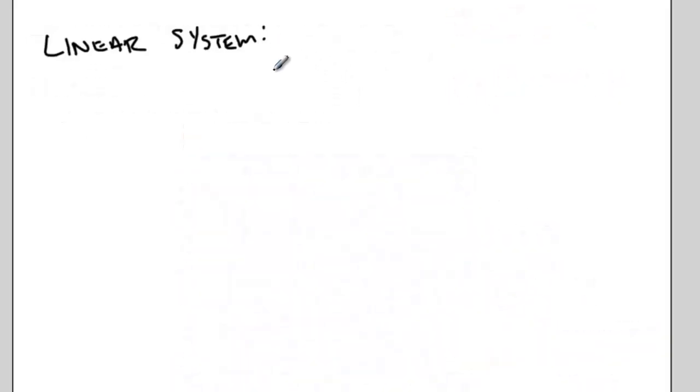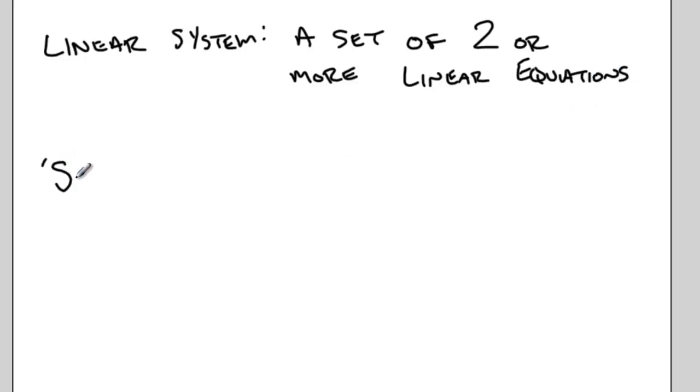To summarize, a linear system is a set of two or more linear equations.